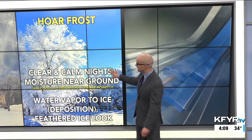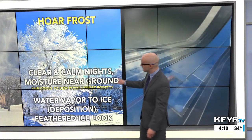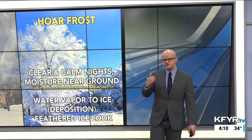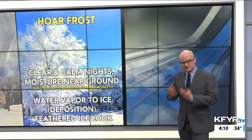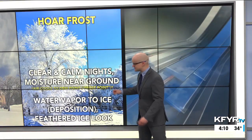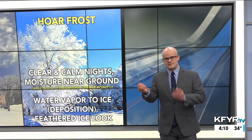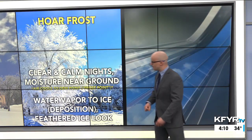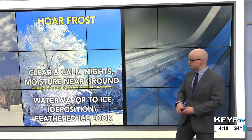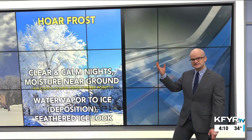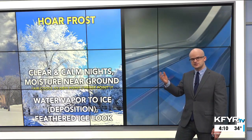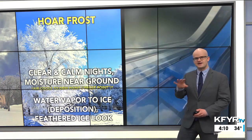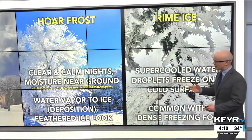Hoarfrost happens on clear and calm nights, so there's no fog present when you have that moisture near the ground. The air cools to the dew point — kind of like how dew forms in the summertime in liquid form. You can envision it as the frost point: once your temperature and dew point meet, that moisture can freeze into hoarfrost. It goes right from the gas state to the solid state — deposition, water vapor straight to ice — and it can have that feathered ice look when deposited on objects.